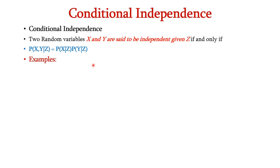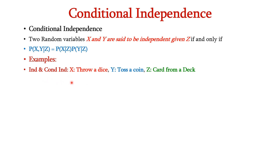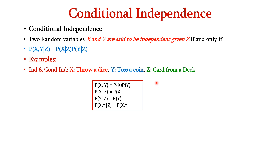Let us see some examples for independence and conditional independence. We have three events X, Y and Z: X is throwing a dice, Y is tossing a coin, and Z is getting a card from a deck. If X and Y are independent, we can express it as P(X, Y) equals P(X) times P(Y), since throwing a dice and tossing a coin are not dependent on each other. If X and Y are not dependent on Z, then P(X given Z) equals P(X), P(Y given Z) equals P(Y), and P(X, Y given Z) equals P(X, Y).